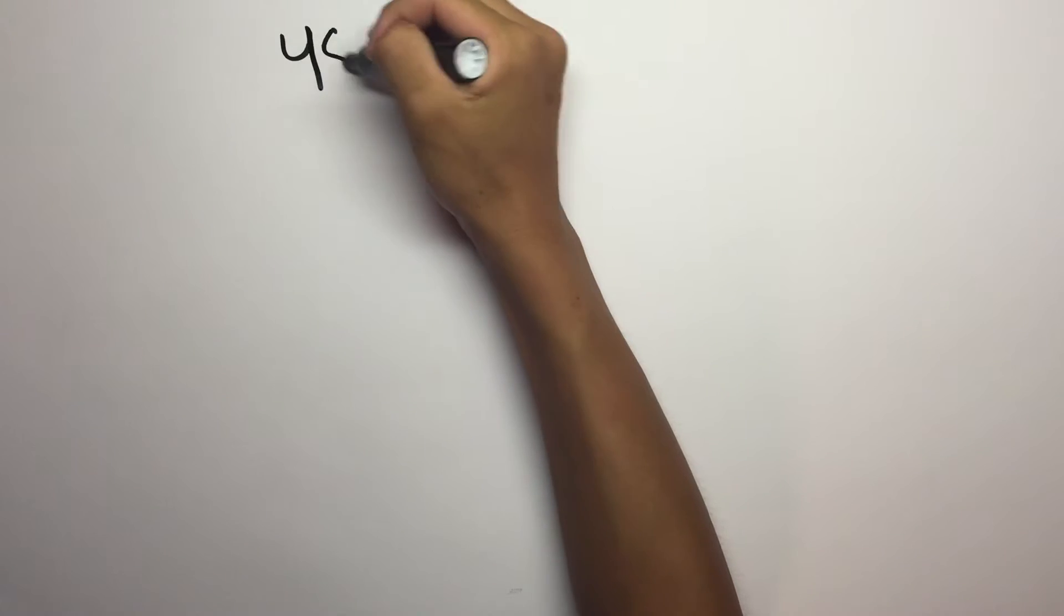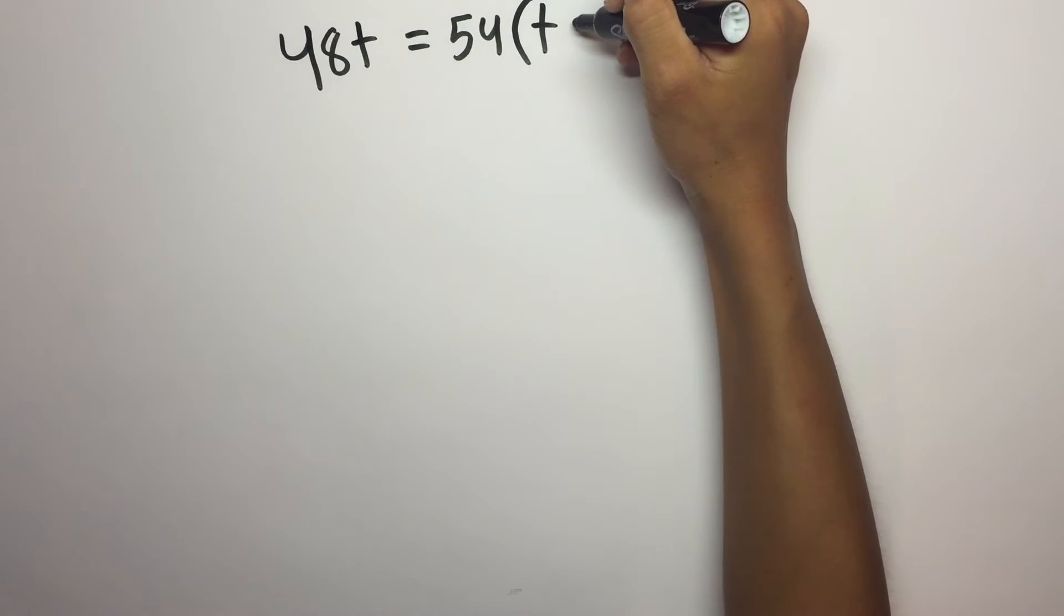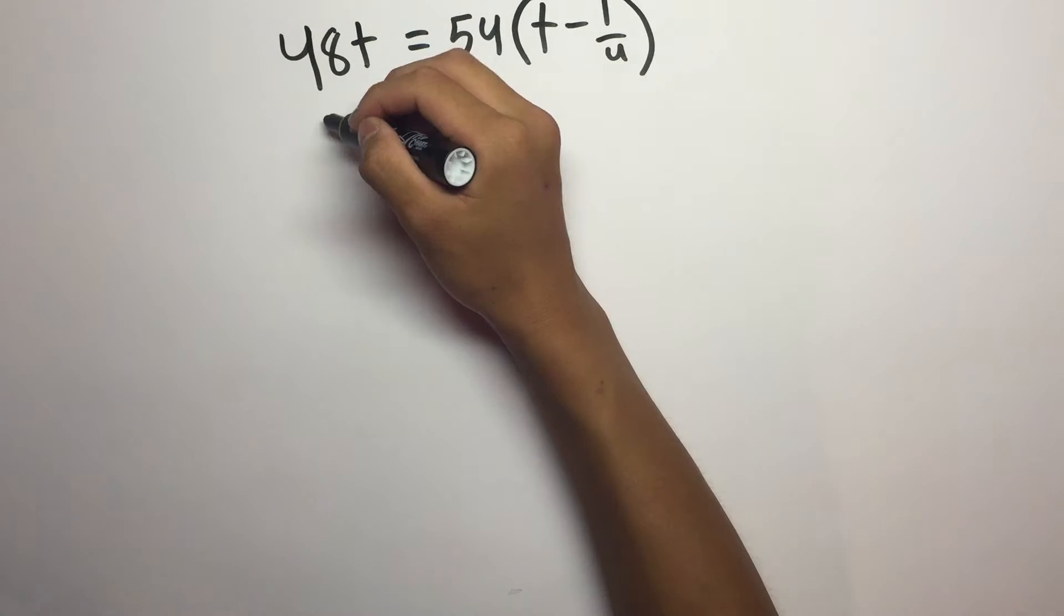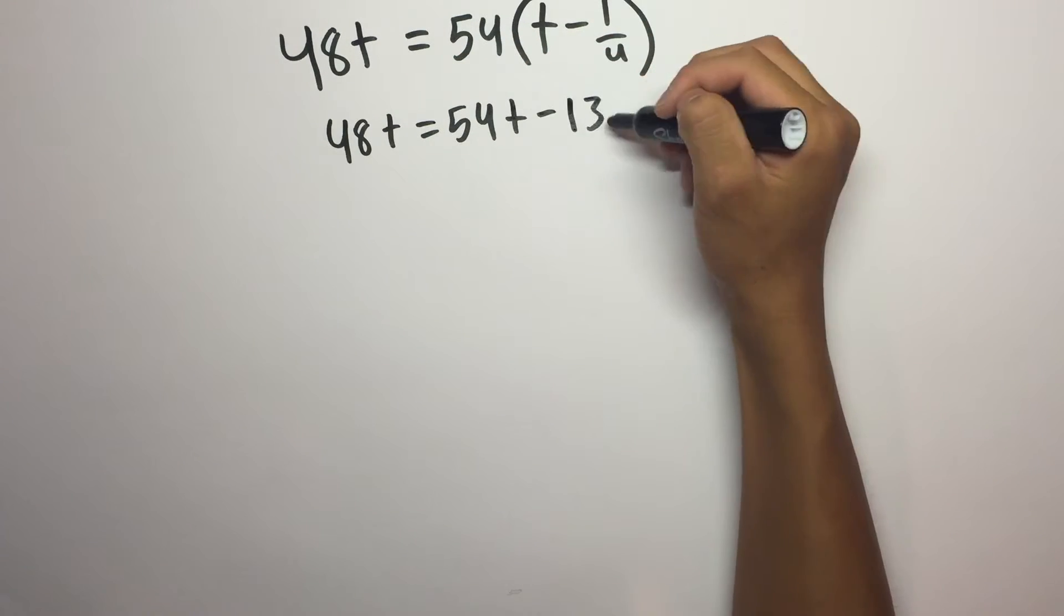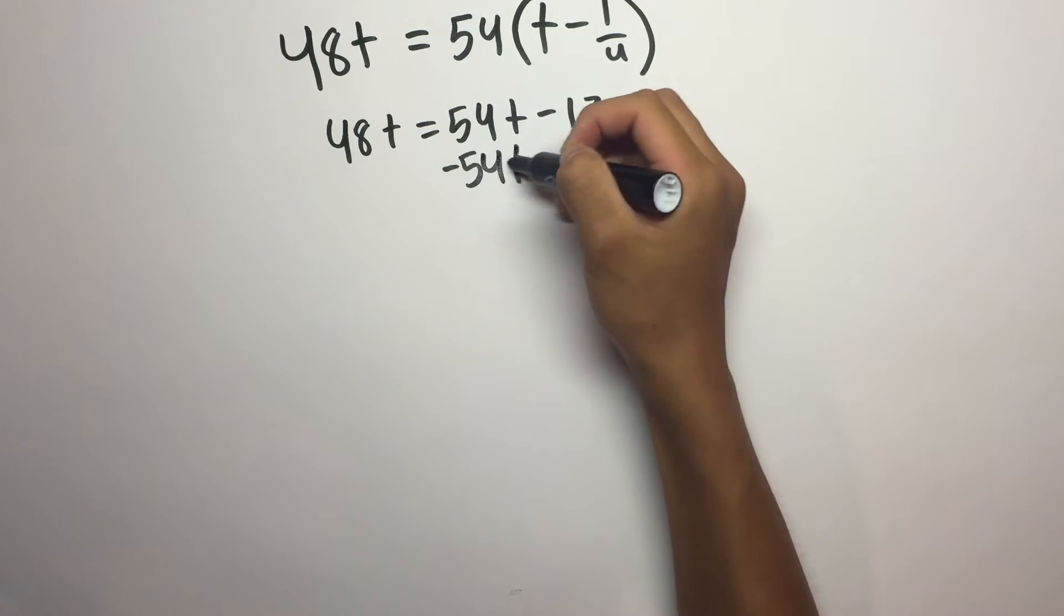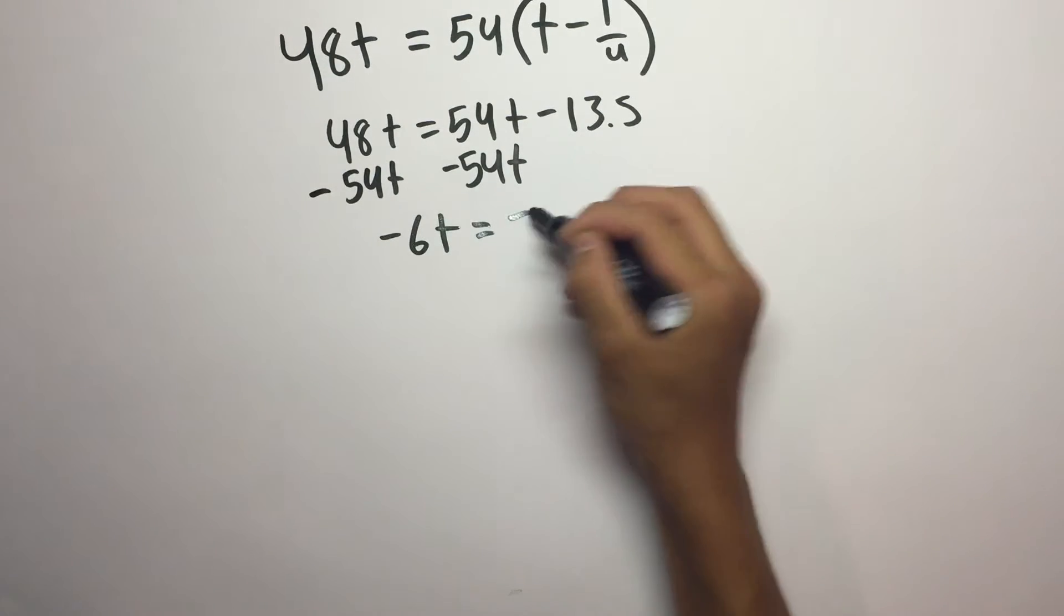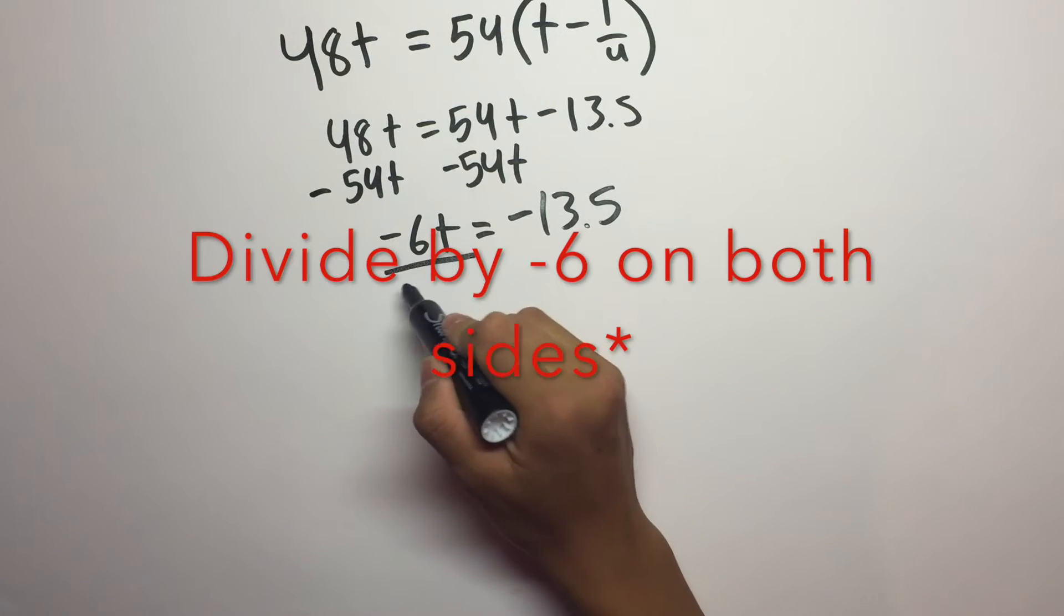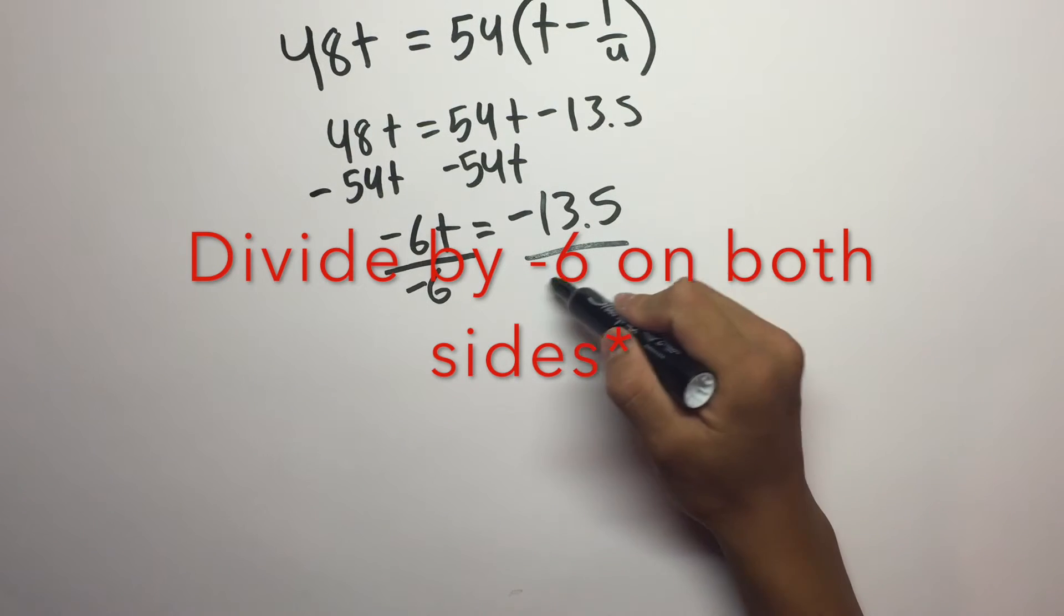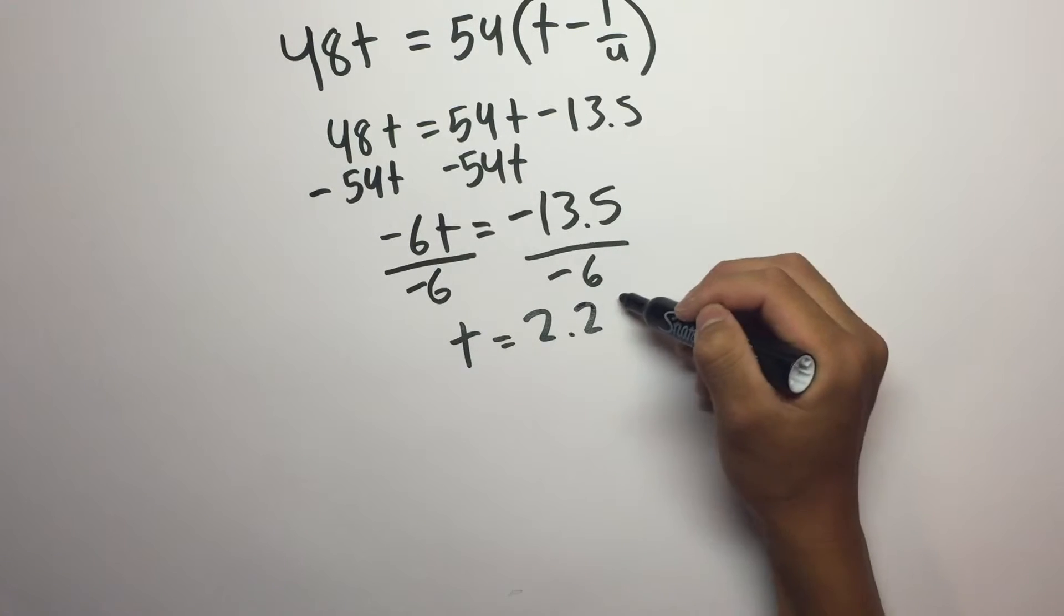So we're just going to rewrite it. So 48T equals 54T minus 13.5. We're going to subtract 54T. Then we have negative 6T equals negative 13.5. So we're going to divide by negative 6. And then we get T equals 2.25.